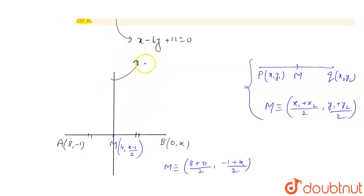Substituting x = 4 and y = (k - 1)/2 into the equation: 4 - 6((k - 1)/2) + 11 = 0, which is 4 - 3(k - 1) + 11 = 0, or 4 - 3k + 3 + 11 = 0. This gives us 18 = 3k,